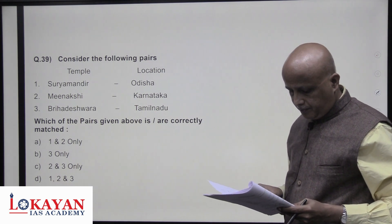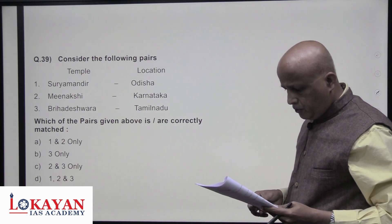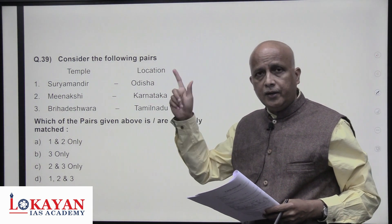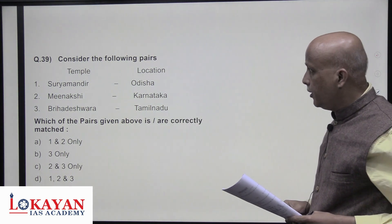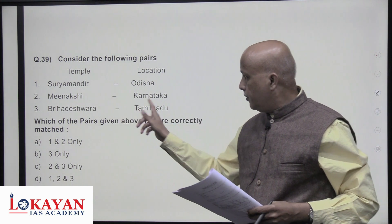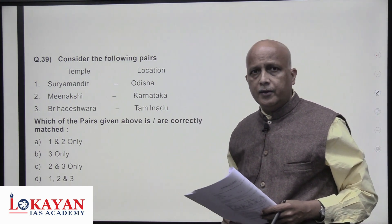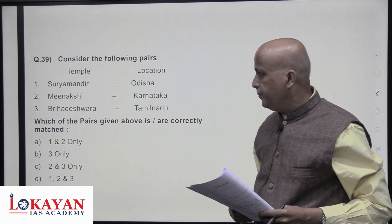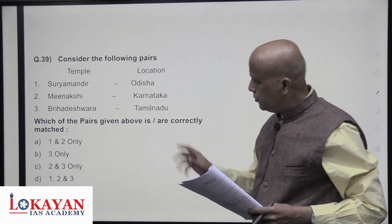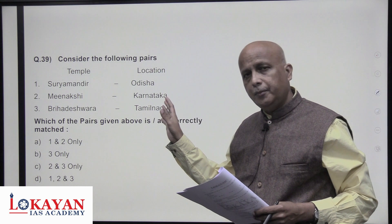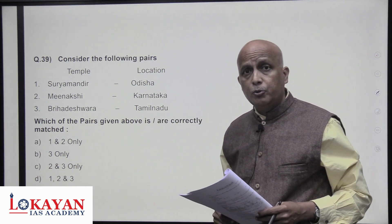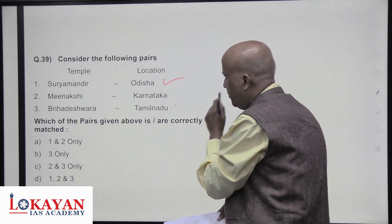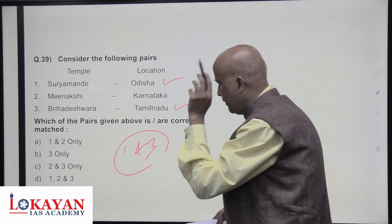Surya Mandir in Orissa (Konark) is a World Heritage Site and one of the most visited tourist sites in India after the Taj Mahal — correct. Brihadeshwara temple in Tamil Nadu — also true; it is the greatest and grandest temple of India, also called the Rajarajeswara temple. Meenakshi Sundareshwara temple — the most famous such temple is in Madurai in Tamil Nadu, not in Karnataka. So statements one and three are correct.